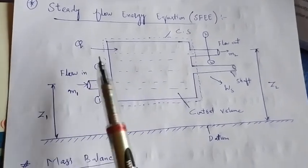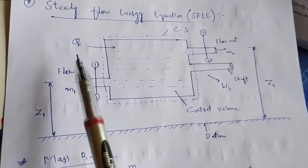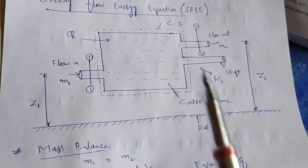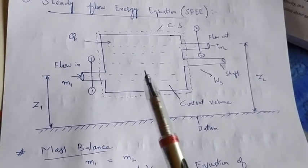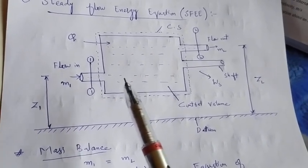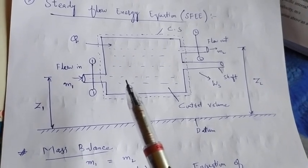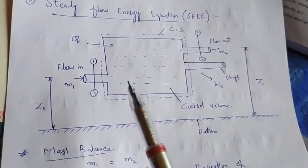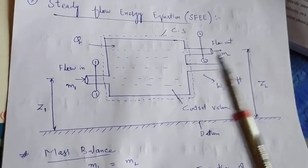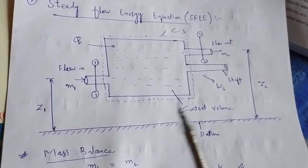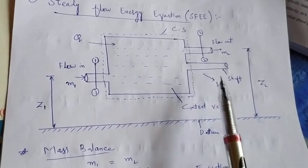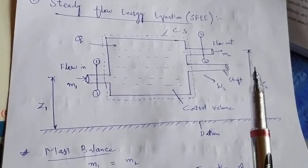We also consider that the heat input into the system or control volume is Q, and there are two types of work. First is flow work, which we considered as PV — pressure-volume work, or the work required to move the fluid into and out of the control volume. Second is shaft work, or mechanical work, which is done by the fluid on the system.